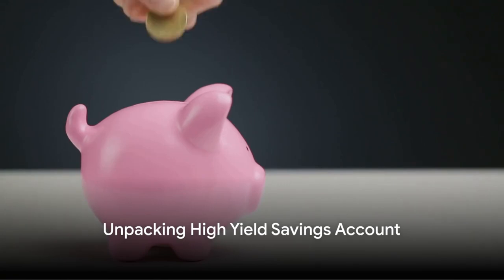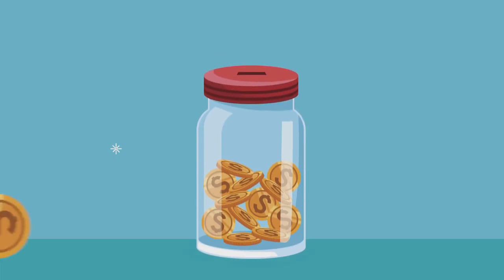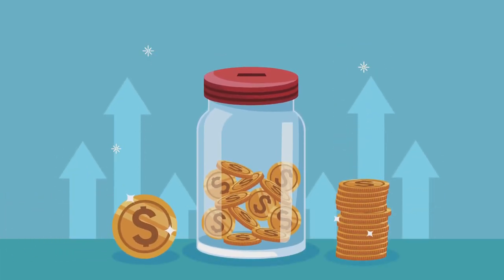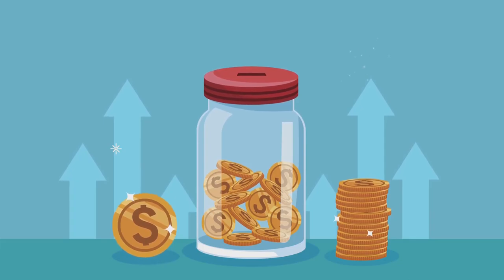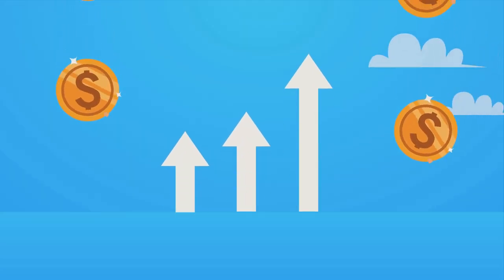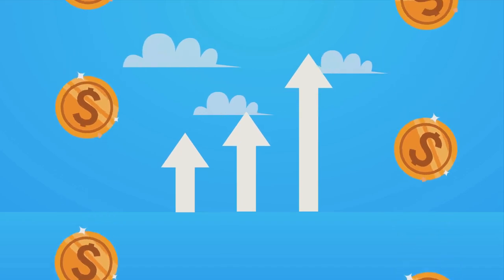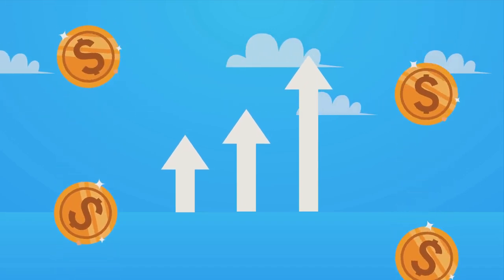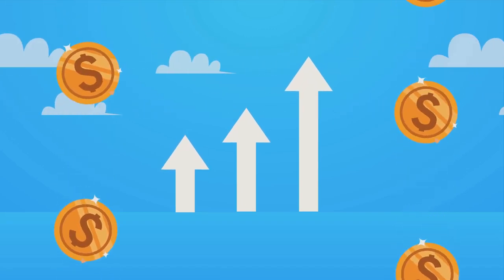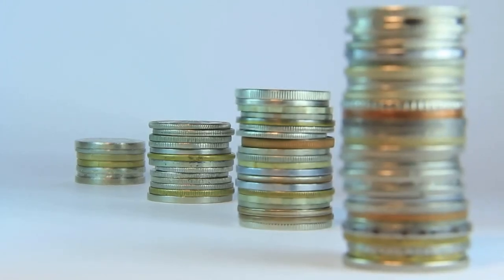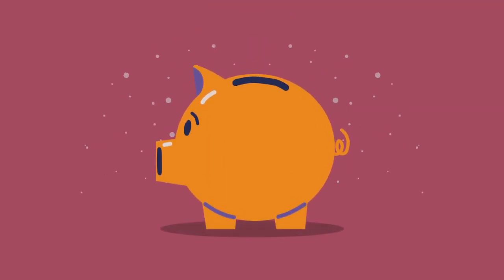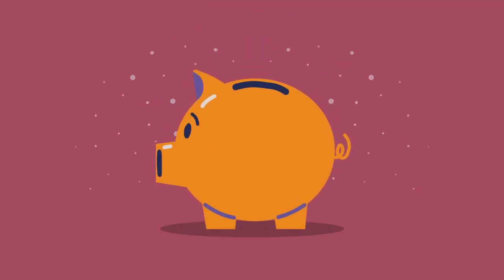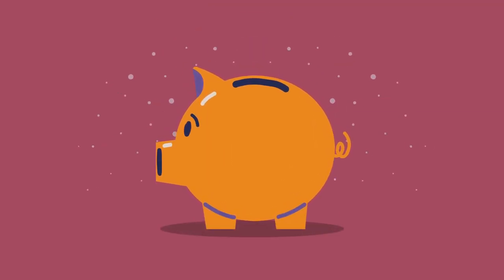So what exactly is a high-yield savings account and how does it work? A high-yield savings account is a type of savings account that provides a higher return on your money than a conventional savings account. It's like your regular savings account, but on a bit of a caffeine kick. Imagine your money not just sitting, but doing a bit of a workout, generating more money for you. Your money is not just stored — it grows, at a rate that's usually 20 to 25 times more than the national average of a traditional savings account. That's quite a leap.